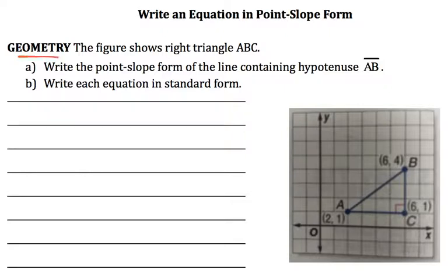The figure shows the right triangle ABC. Now, you'll also see it written like this, where it just has a triangle symbol and then ABC in all capital letters. And that's because in geometry, points are labeled with capital letters.